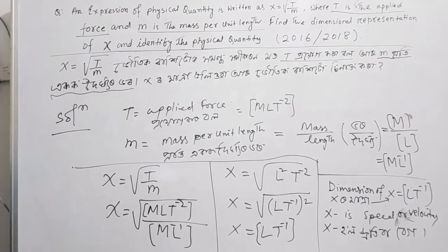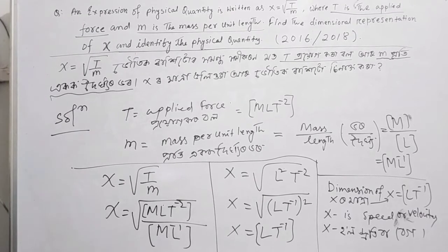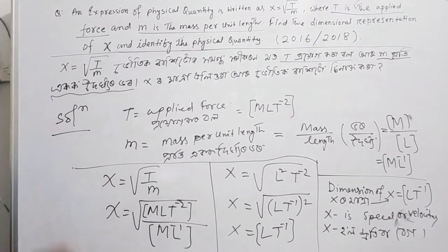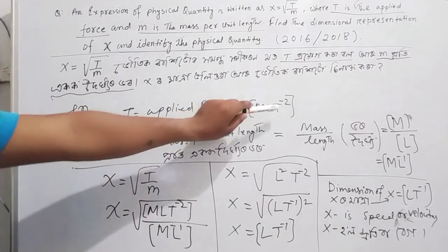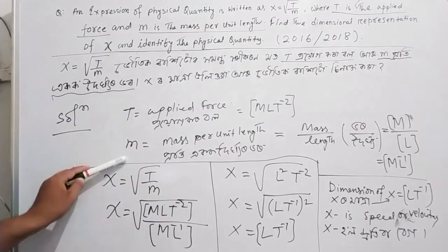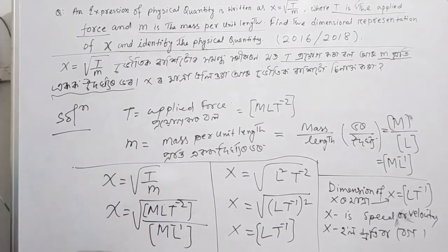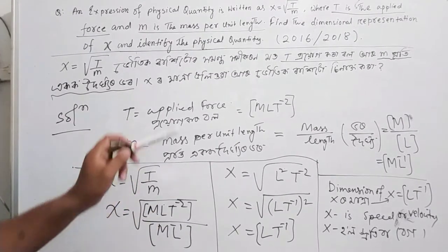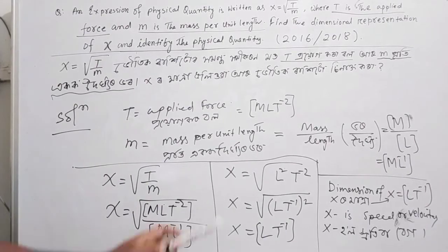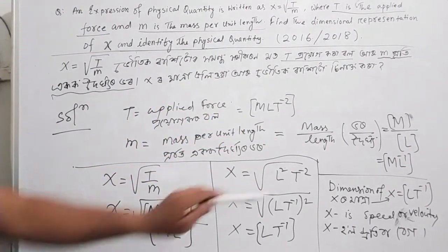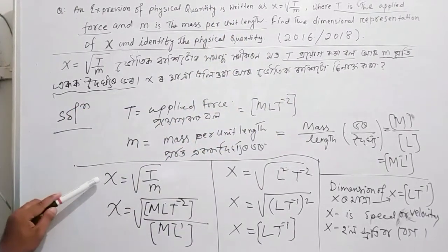To recap: T is the applied force with dimensional formula MLT to the power minus 2. M means mass per unit length, which is mass by length, giving dimension ML^-1.